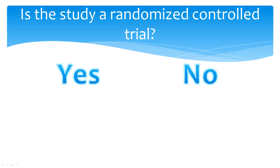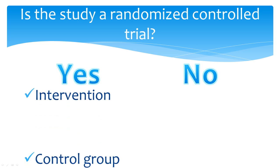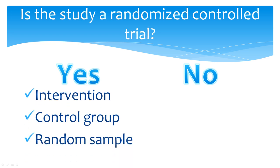Randomized controlled trials have three key components: a random sample, a control group, and an intervention. If your study is truly a randomized controlled trial, it should say so in the abstract and/or the methods section of the article. If it doesn't say, then it is likely that the study is either descriptive non-experimental or quasi-experimental. You can tell the difference by looking into the methods section further.